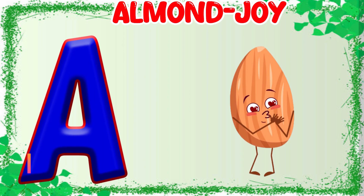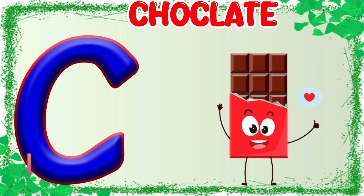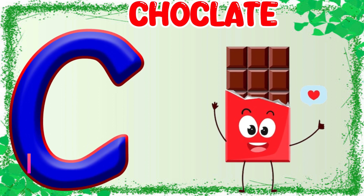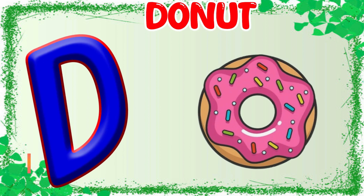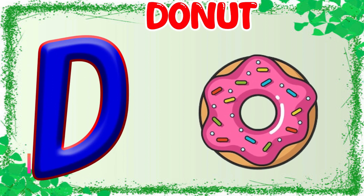A is for Almond Joy. A. Almond Joy. B is for Burger. B. Burger. C is for Chocolate. C. Chocolate. D is for Donuts. D. Donuts.